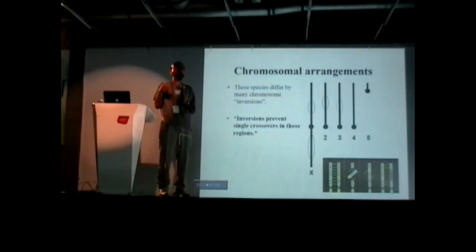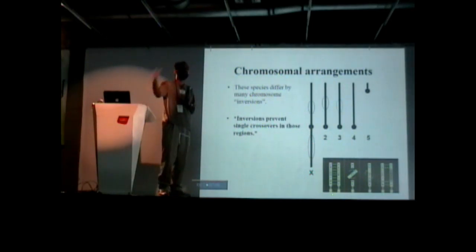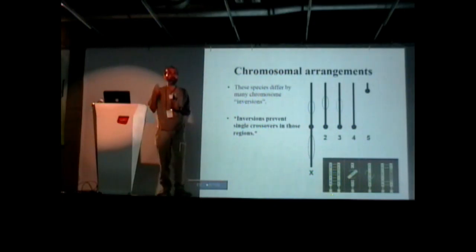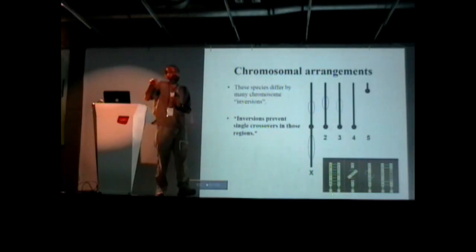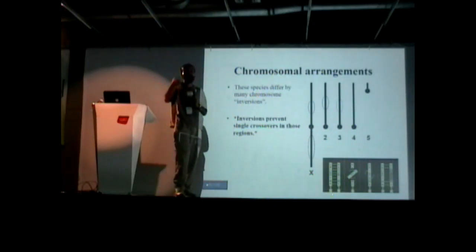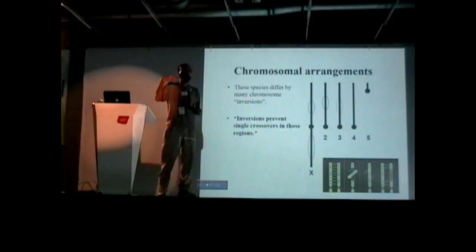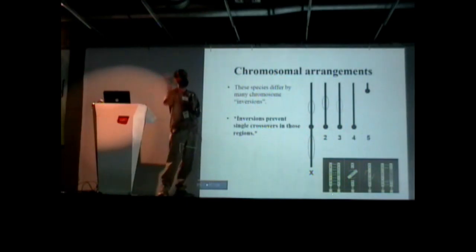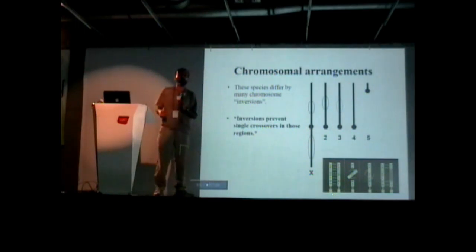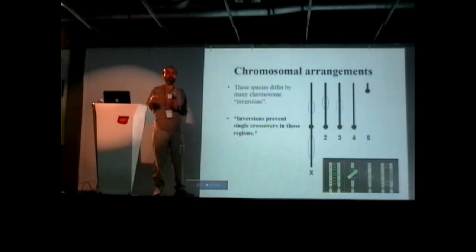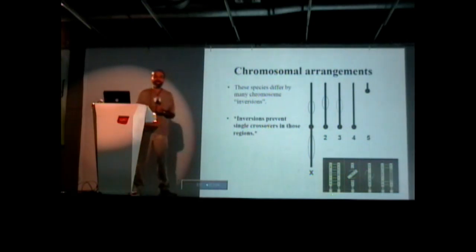It doesn't seem like there's anything particular about the X, outside of the fact that it has multiple inversions, at least in our system. However, I know in other systems that is the case. In the flycatcher birds, for example, there's a big effect on the X chromosome, independent of anything else. But we don't see that in pseudoobscura or persimilis.